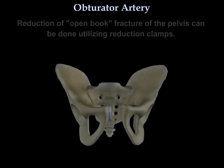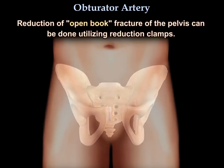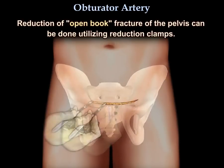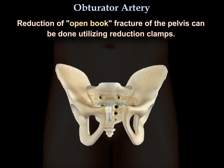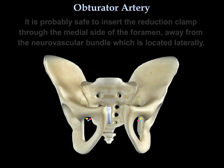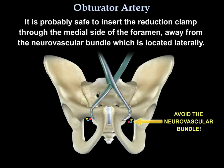Reduction of an open-book fracture of the pelvis can be done utilizing reduction clamps. It is probably safe to insert the reduction clamp through the medial side of the foramen, away from the neurovascular bundle which is located laterally.